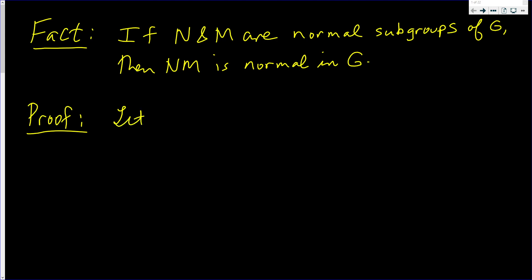Okay, so how about we let g be an element in G. And we just want to show that NM is normal. That is, I want to show that what I just wrote down equals NM.